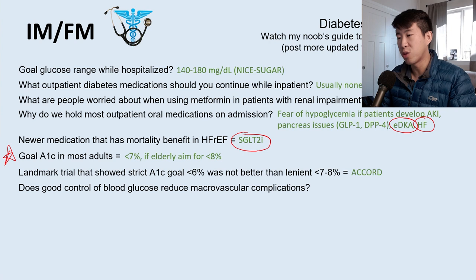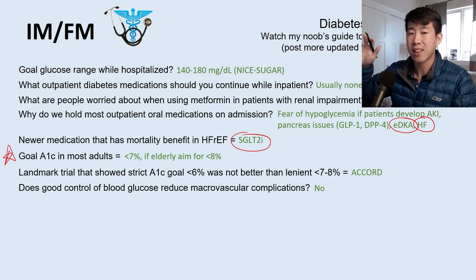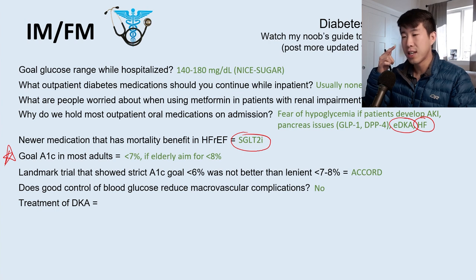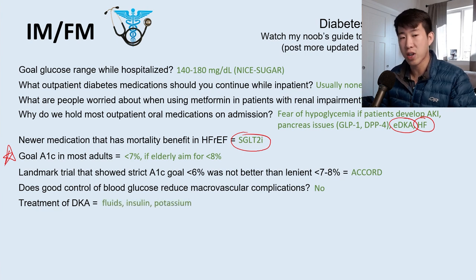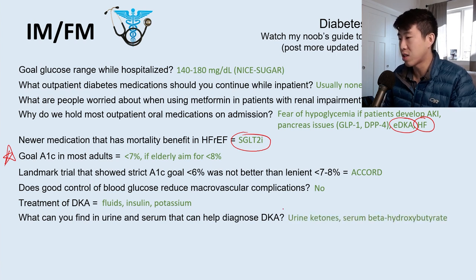Good blood glucose control does not reduce macrovascular complications like stroke and heart attack — even dropping A1c from 10% to 7% still leaves elevated cardiovascular risk. What it does reduce is microvascular complications: peripheral neuropathy, retinopathy, and nephropathy. Treatment of DKA revolves around fluids (aggressive hydration), insulin, and potassium — because whole body potassium is often depleted. DKA findings: urine ketones on urinalysis and serum beta-hydroxybutyrate.